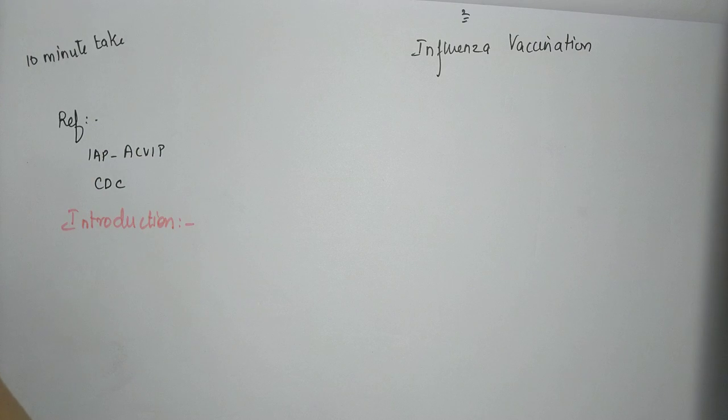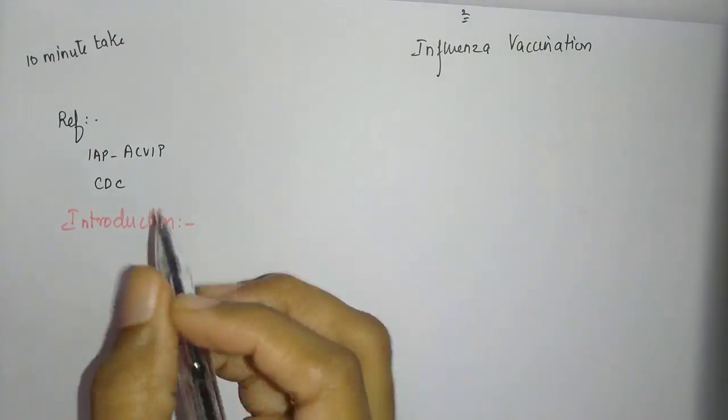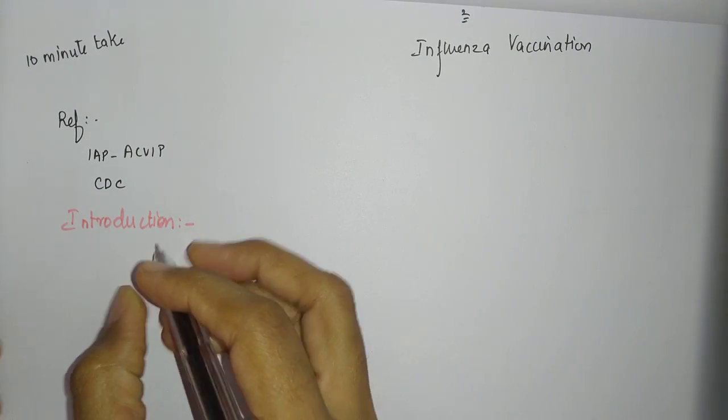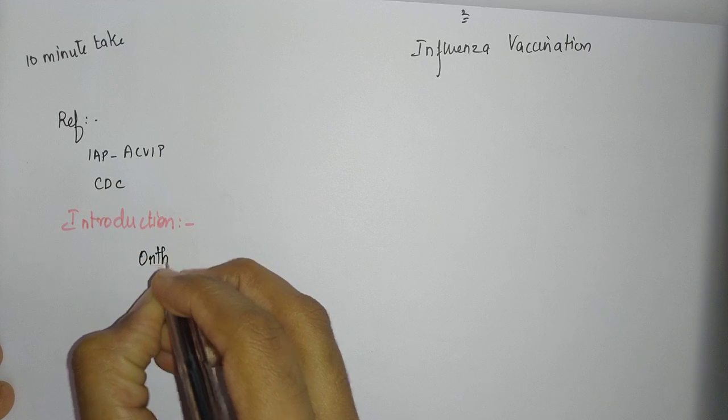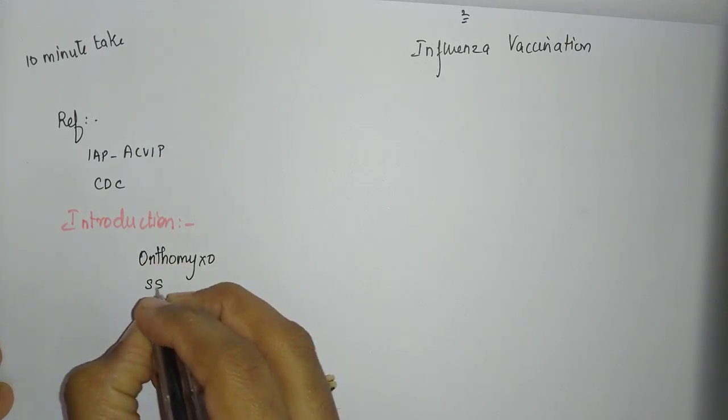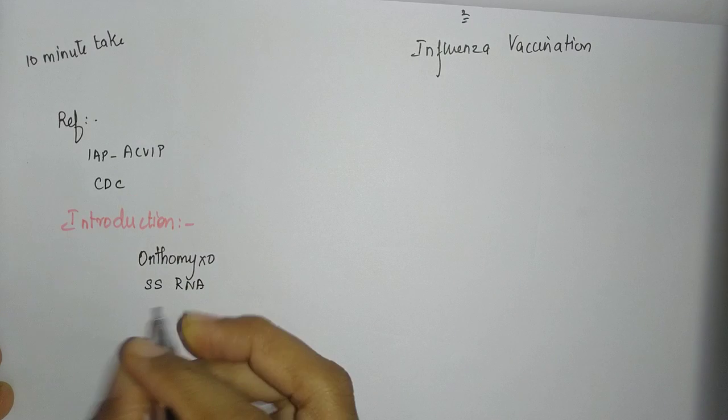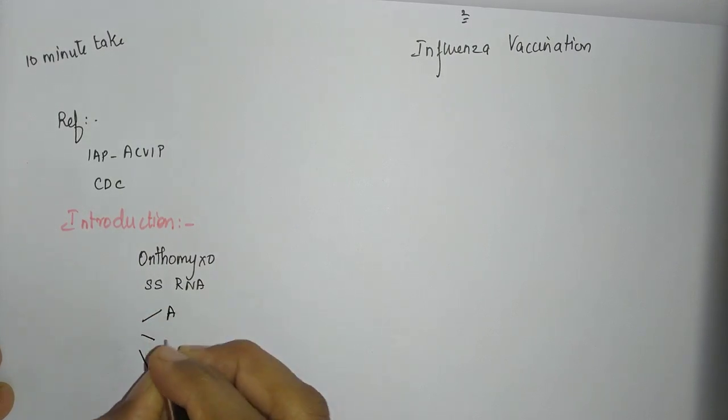If a question on influenza is asked, start with an introduction. In the introduction you will talk about the virus which causes influenza. This is basically an orthomyxovirus which has single-stranded RNA, and it is of three types: A, B, and C. We are worried about A and B because those are the ones which cause disease.